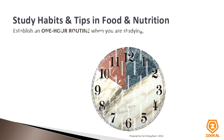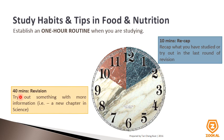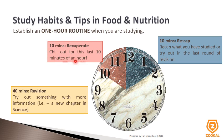Try establishing a 1-hour routine when you are studying. For the first 10 minutes, you recap what you have studied or practiced in the last round of revision. The next 14 minutes, you try out something with new information — for example, a new topic in science or an essay question you have never tried before. Then the last 10 minutes of the 1-hour routine, you recuperate — you relax and chill out. So one round of studying cycle is 1 hour: the first 10 minutes you recap, the next 14 minutes you revise, and the last 10 minutes you recuperate.